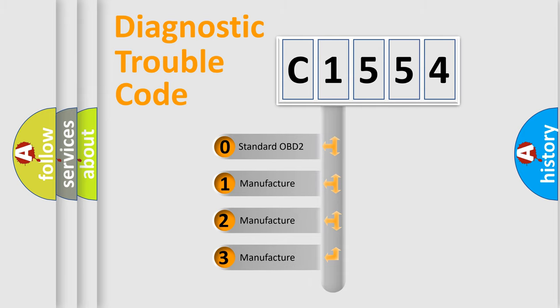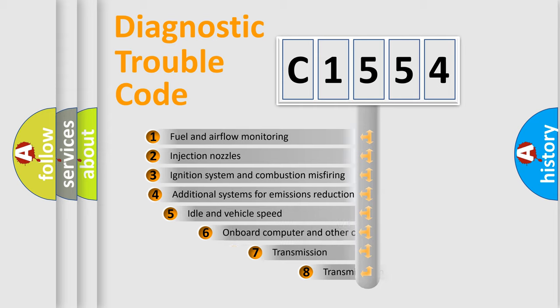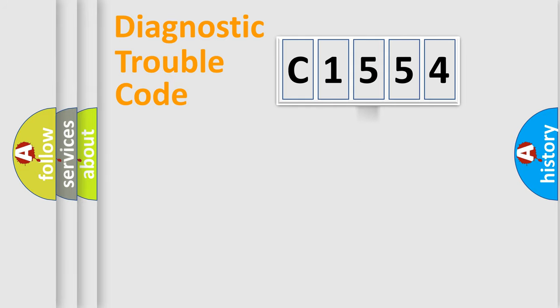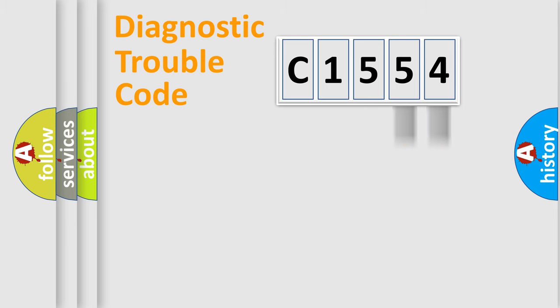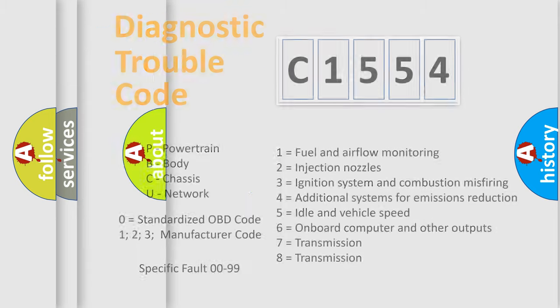If the second character is expressed as zero, it is a standardized error. In the case of numbers 1, 2, or 3, it is a more specific expression of a car-specific error. The third character specifies a subset of errors. This distribution is valid only for the standardized DTC code, and only the last two characters define the specific fault of the group. Such a division is valid only if the second character code is expressed by the number zero.